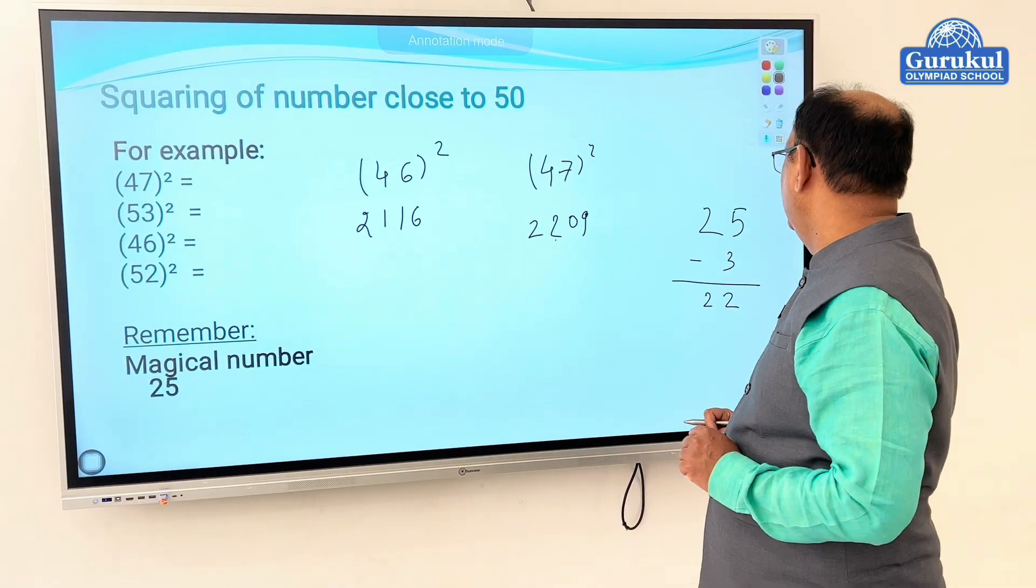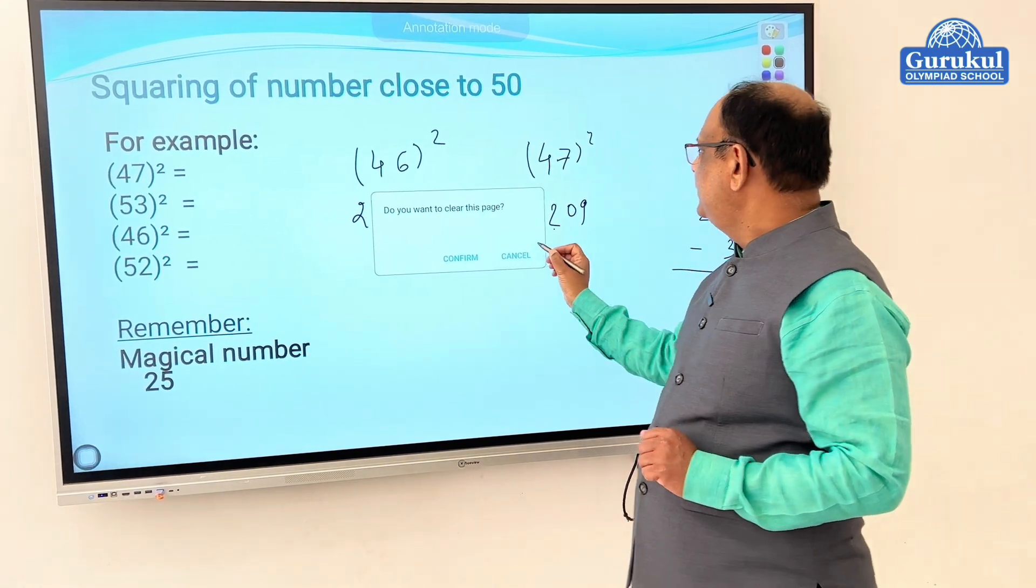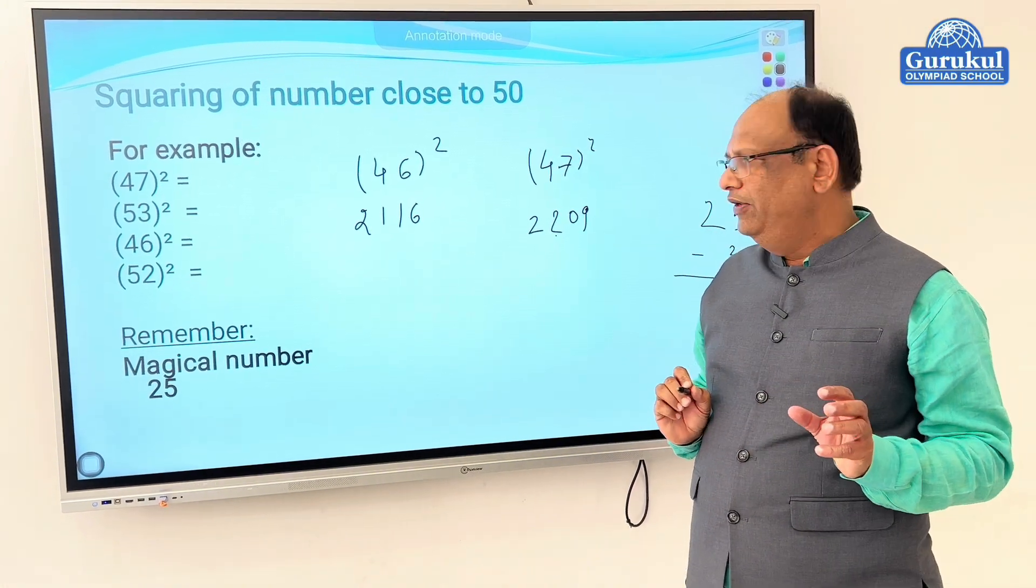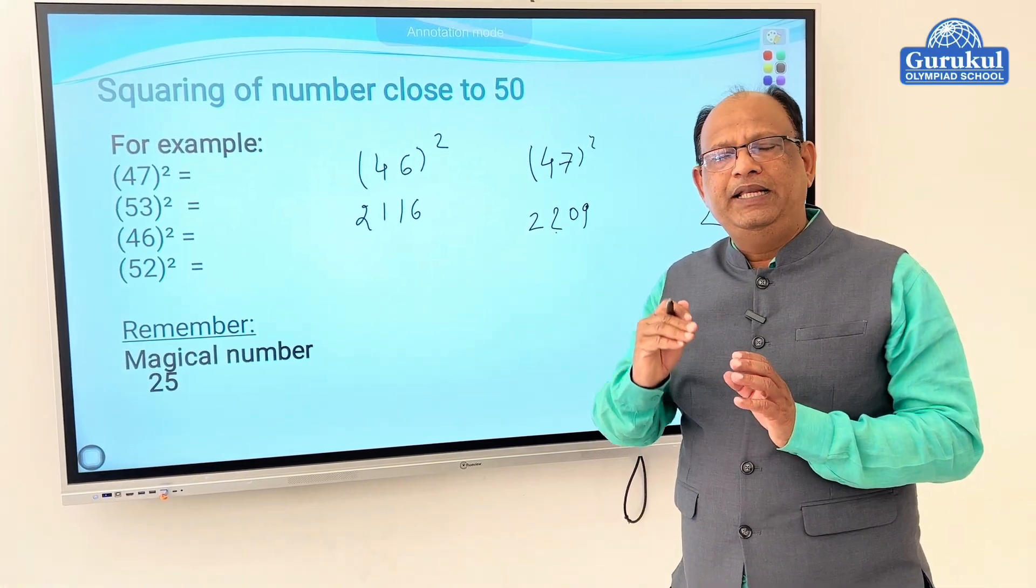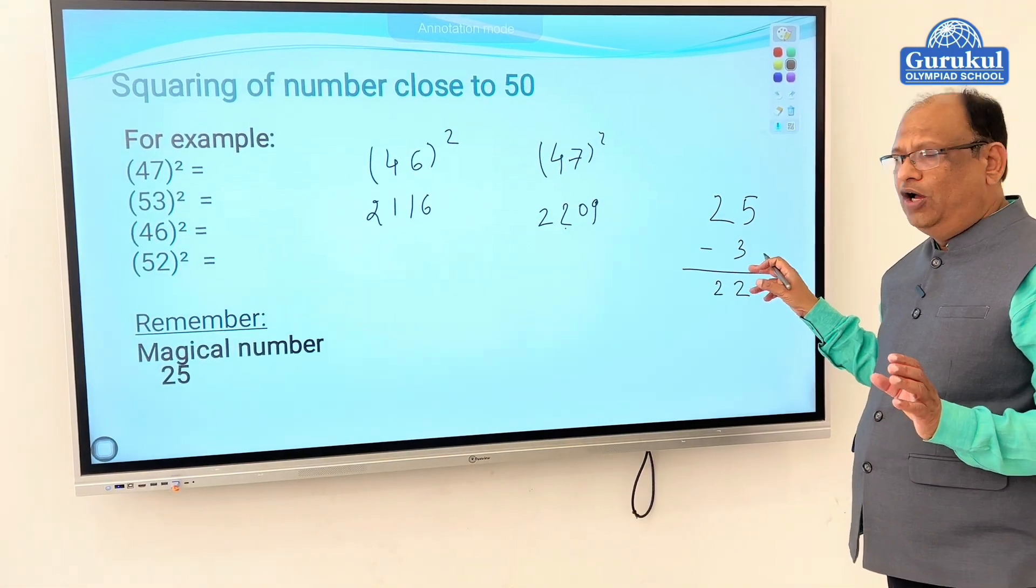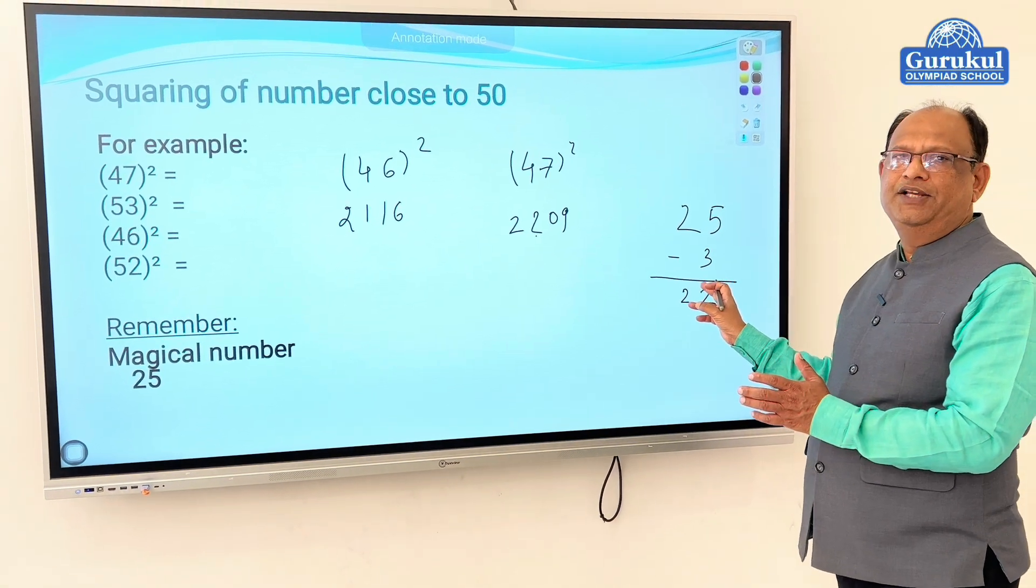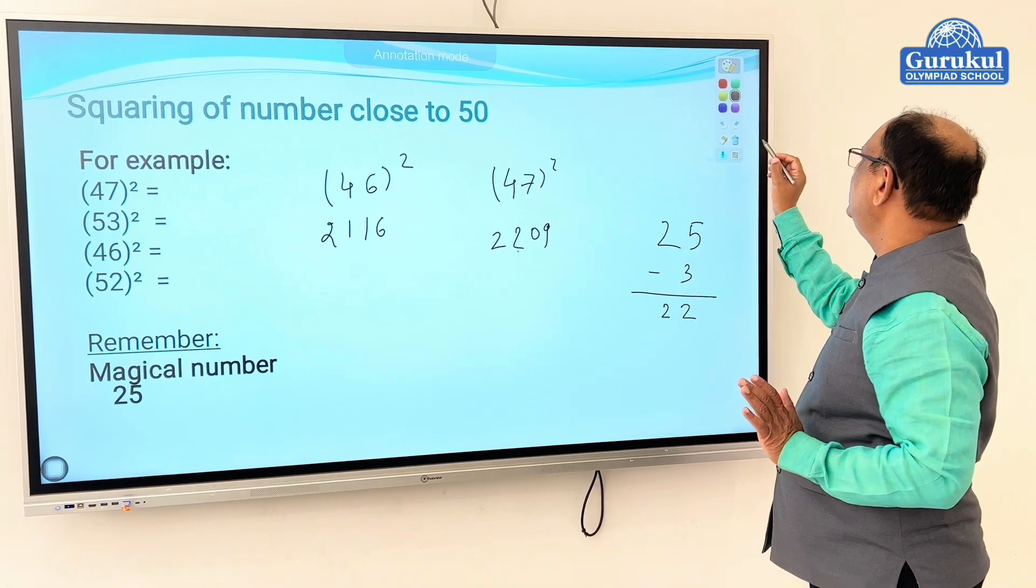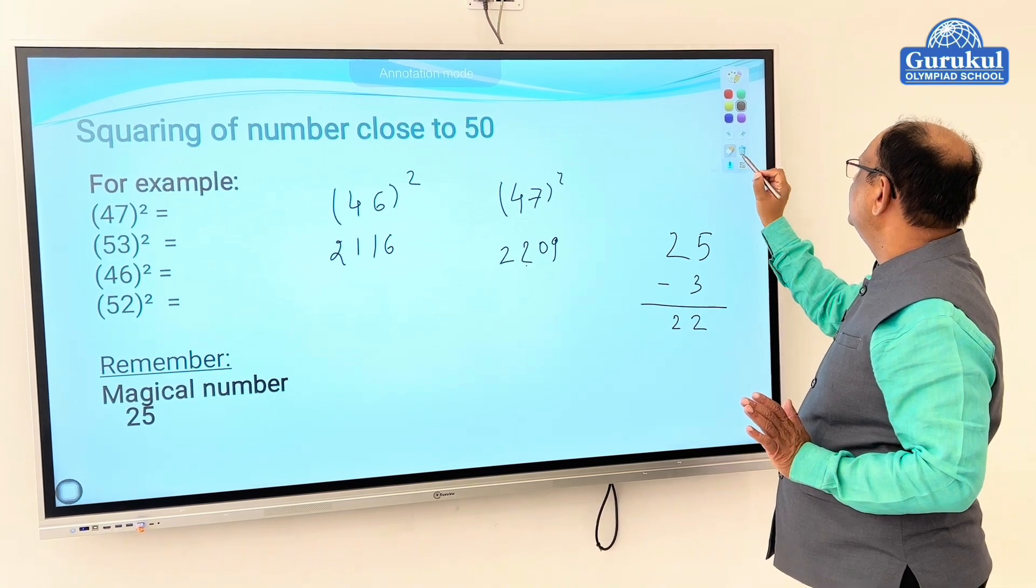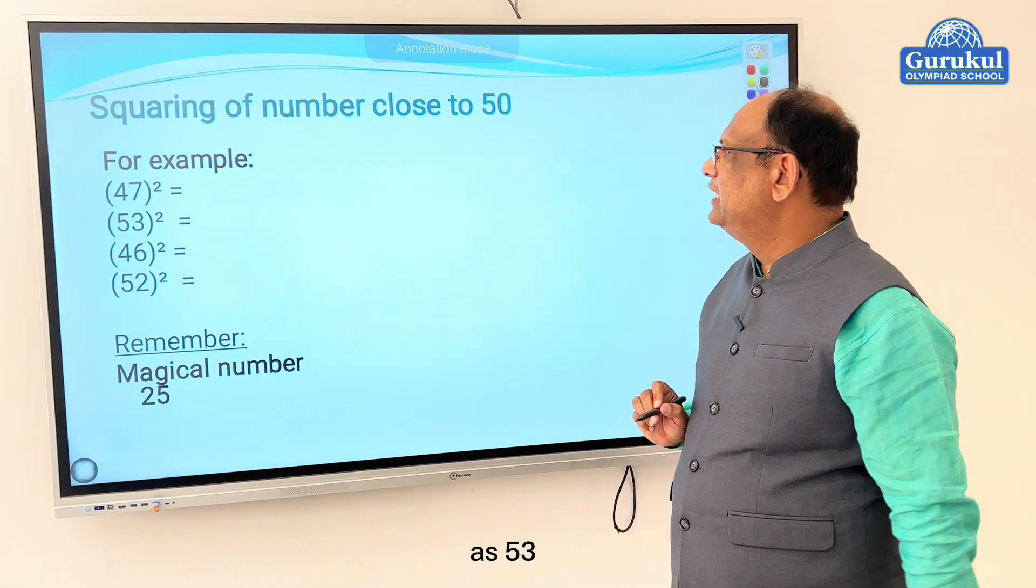Now suppose the number is above 50. The technique is very simple. What you have to do: if the number is above 50, you add to 25. And if the number is below 50, you subtract from 25. That's it, such a simple method.